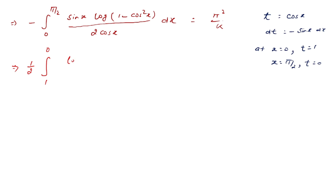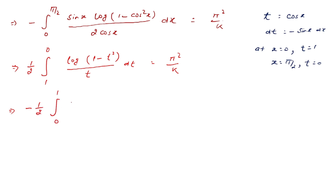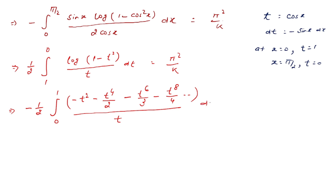So −sin(x) dx → dt, and this becomes ∫ log(1 − t²)/t dt = π²/k. After limit change: minus 1/2 ∫₀¹ log(1 − t²)/t dt = π²/k. Using the expansion: log(1 − x) = −x − x²/2 − x³/3 − x⁴/4 − ... applied to log(1 − t²), divided by t, equals π²/k.